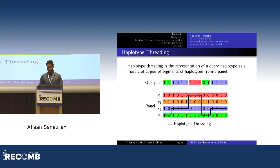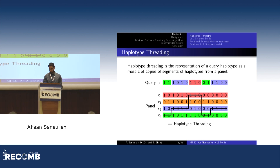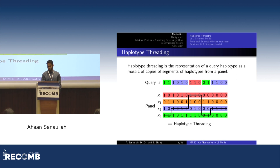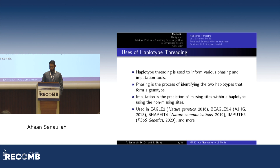Haplotype threading is the representation of a query haplotype as a mosaic of copies of segments of haplotypes from a panel. In this example, we have a query haplotype Z and a panel X. In the first two sites, we represent Z as copied from X3, then X4 from X2, et cetera. Haplotype threading is used primarily in phasing and imputation tools such as Eagle, Beagle, ShapeIt, Impute, and more.